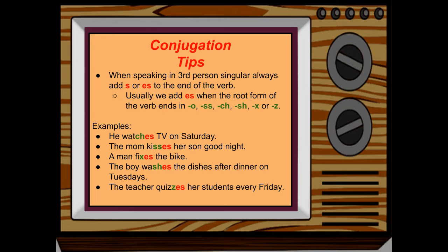Here are some conjugation tips. When speaking in third person singular, always add S or ES to the end of the verb. Third person pronouns are he, she, or it. We usually add ES when the root form of the verb ends in O, SS, CH, SH, X, or Z.